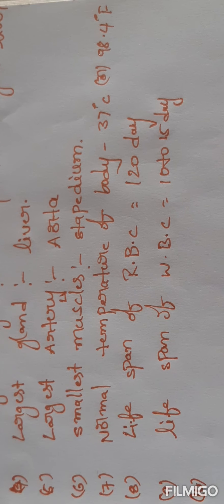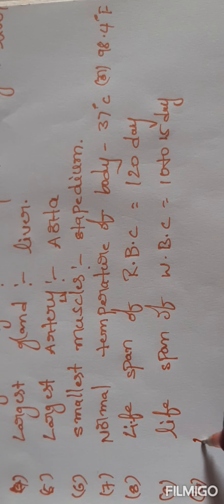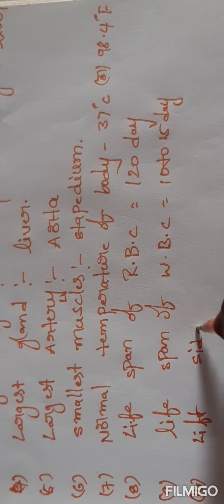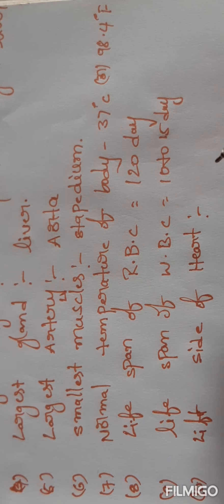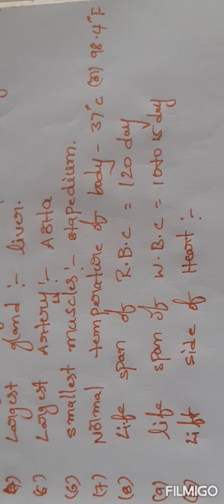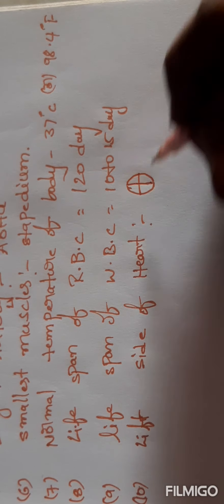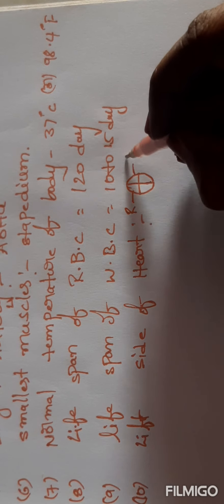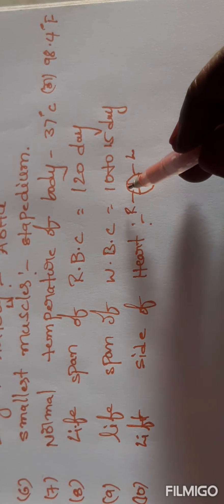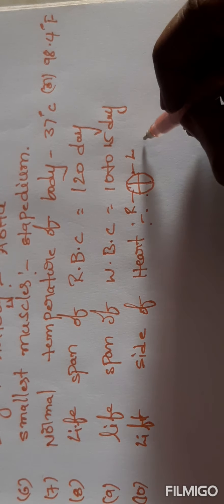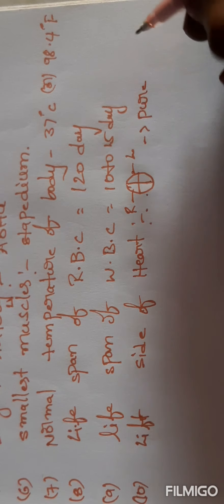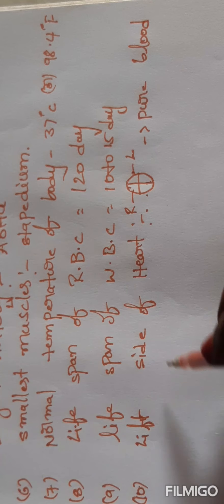Left side of the heart carries pure blood (oxygenated blood). Right side of the heart carries impure blood (deoxygenated blood). Pure blood travels through the left side of the heart.